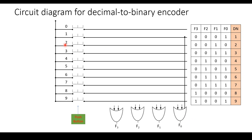For decimal value 2, the binary equivalent is 0010, so an input line is drawn for F1. For decimal value 3, the binary equivalent is 0011, so two input lines are drawn — one for F1 and one for F0. The line representing 3 should be connected to the output lines F1 and F0.